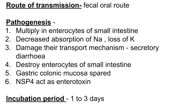The route of transmission is by the fecal-oral route. In pathogenesis, rotavirus enters the small intestine and multiplies in the enterocytes of the small intestine. This causes damage to the small intestine, whose main function is absorption. By multiplying in and destroying the enterocytes, absorption is impaired.